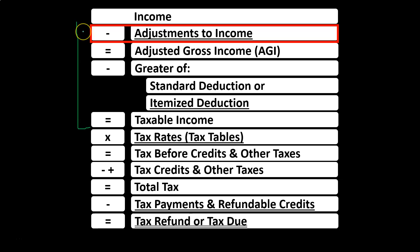Now we're looking at deductions. We could call these above-the-line deductions, adjustments to income, Schedule 1 deductions, or deductions for adjusted gross income. I'll typically refer to them as above-the-line deductions, as opposed to or contrasted with the greater of either the standard deductions or the itemized deductions.